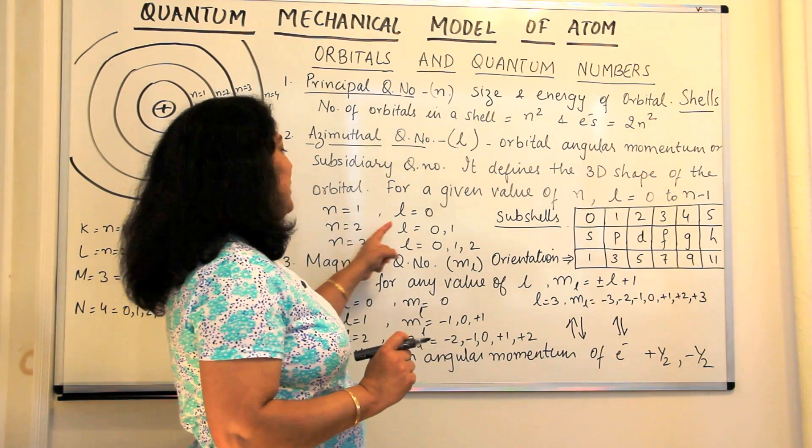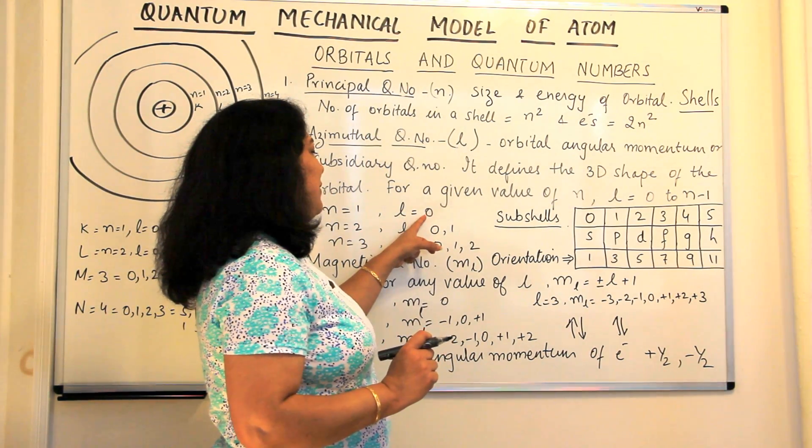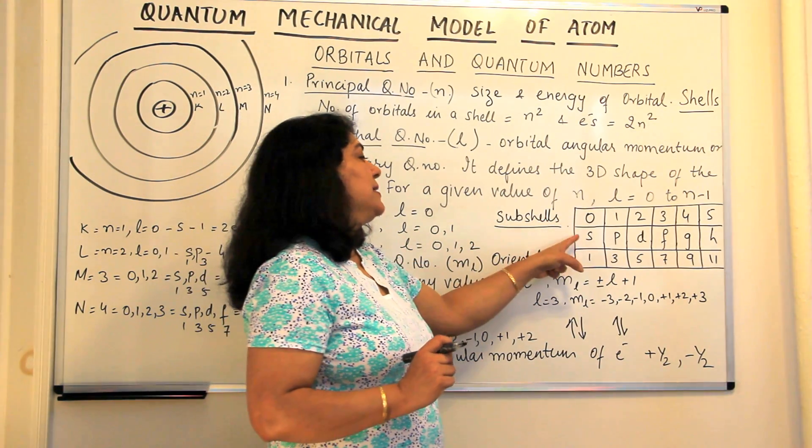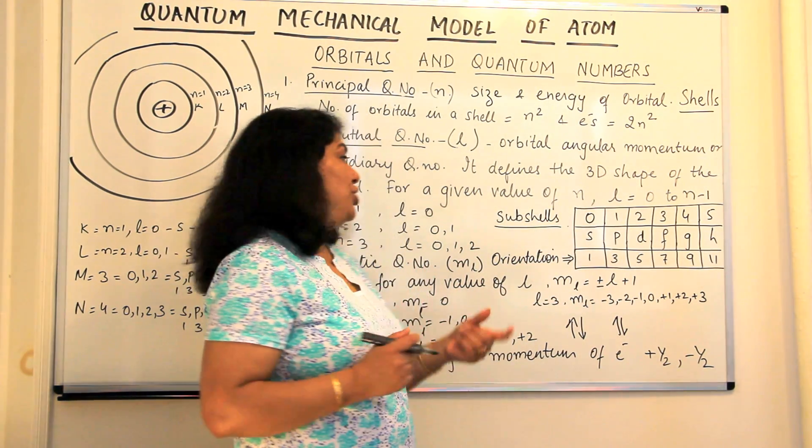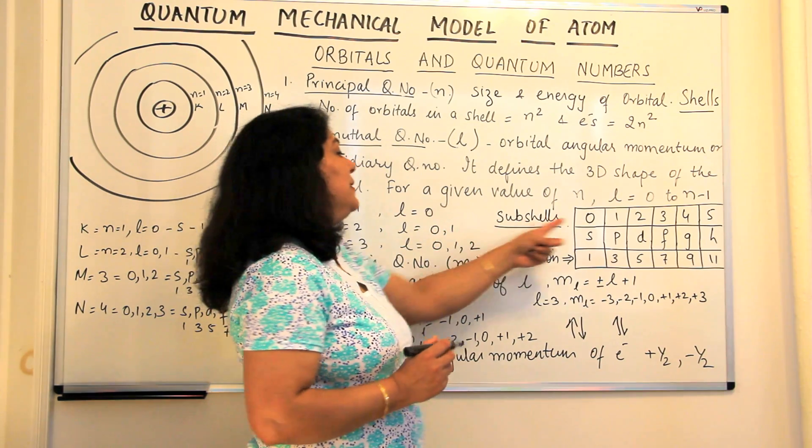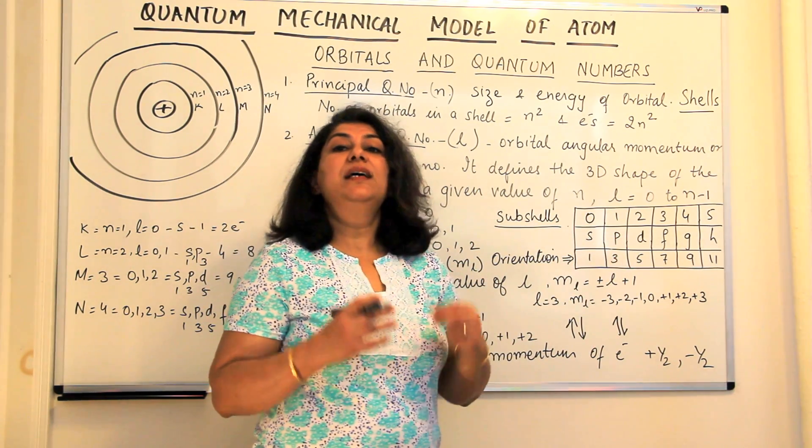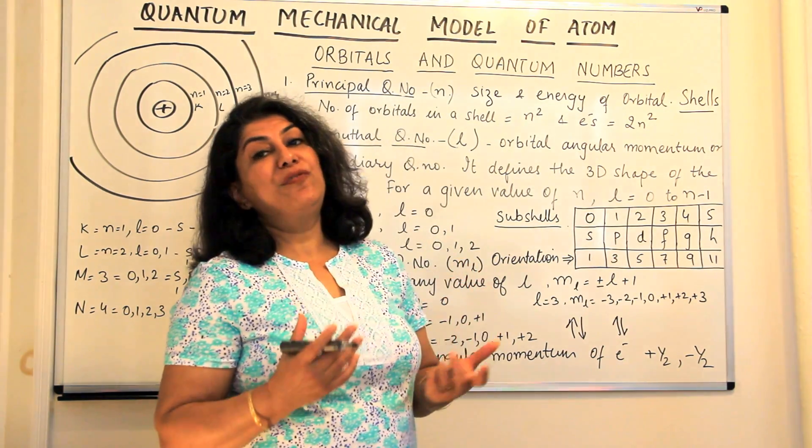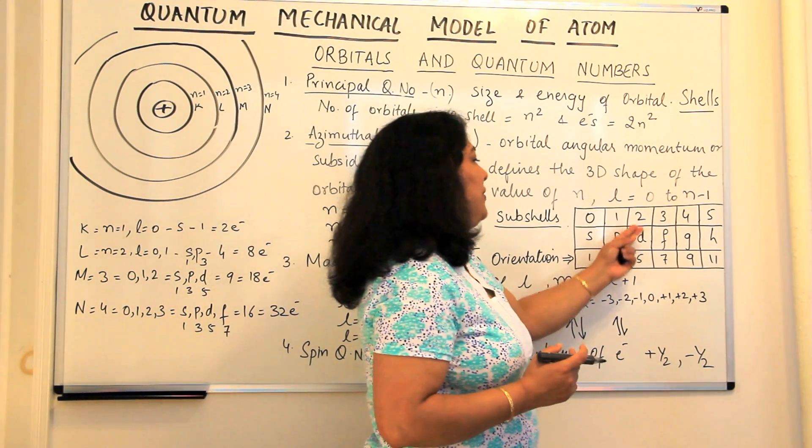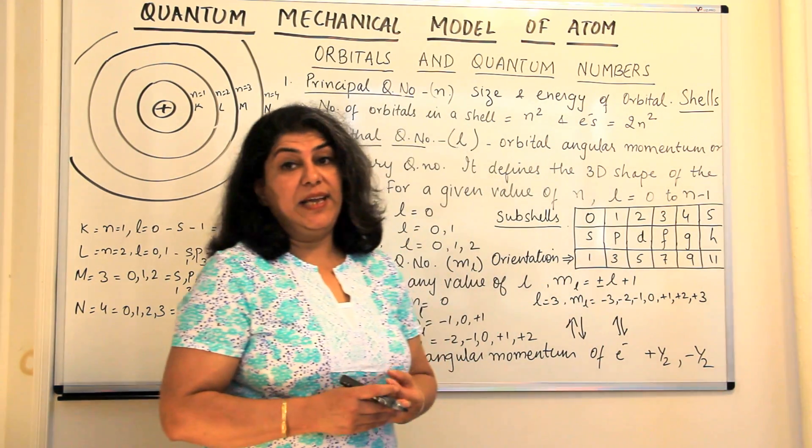Then I also told you that depending on the value of l, whatever if the value of l is 0, that subshell is known as the s subshell. If the value is 1, the subshell is called the p subshell. If it is 2, it is d and 3 is f and 4 is g and 5 is h.